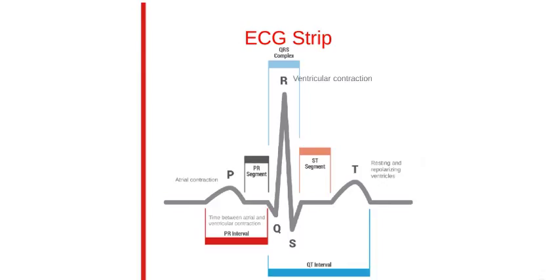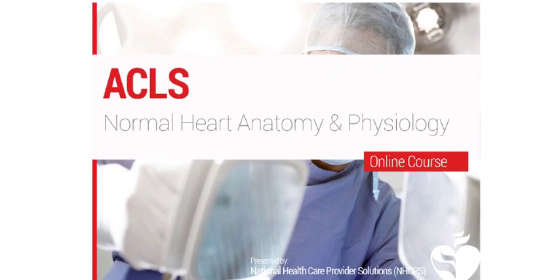Together, a P wave, QRS complex, and T wave are indicative of normal sinus rhythm, or NSR. This concludes the anatomy and physiology of the heart.